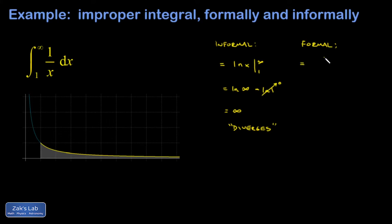So what I'm going to do is replace that infinity with a t in the original integral. And say really what I'm doing is taking the limit as t goes to infinity. Integral from 1 to t, 1 over x.